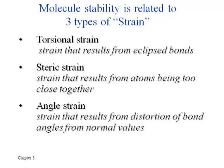There's a lot of torsional strain in eclipsed conformations, and that's relieved by just turning or twisting the bond to make those bonds staggered. In a molecule that has the bonds staggered, we say there is no torsional strain.